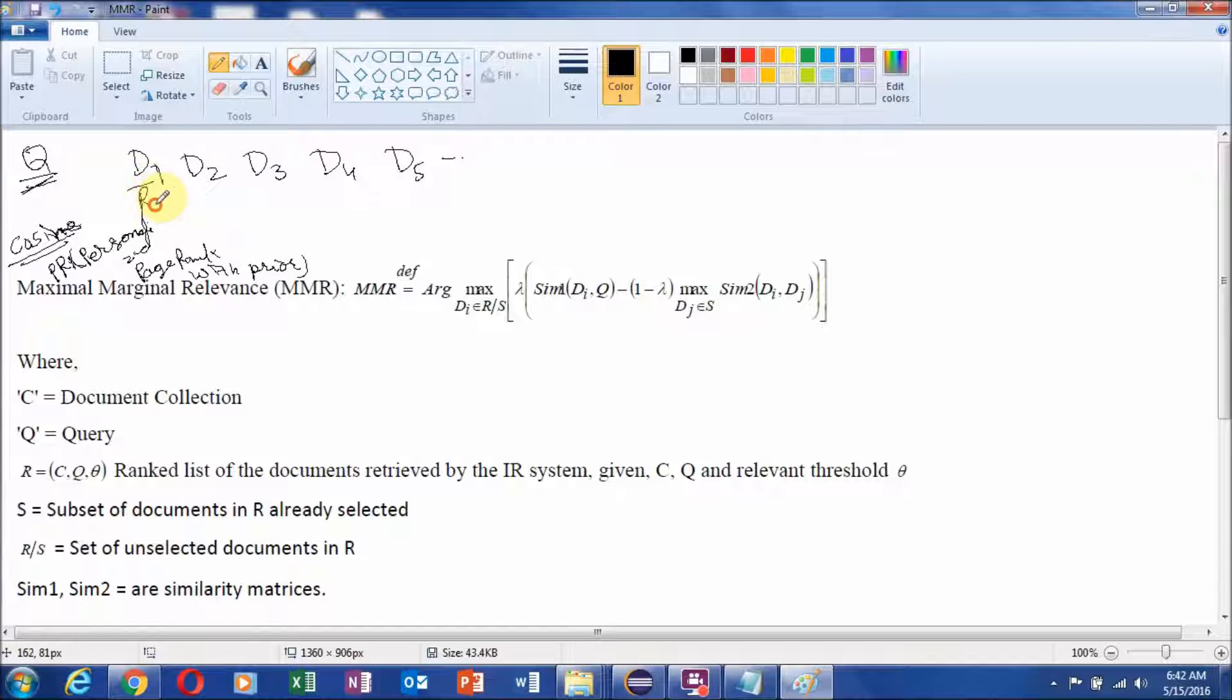Now suppose our ranking system gives the ranks like this with respect to the query Q. R1 is the highest rank, R2 is second highest rank, R3 is the third highest rank, R4 is the fourth and R5 is the fifth highest rank. Now the task is to retrieve top three documents for the given query Q. Till now the situation looks very simple.